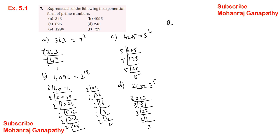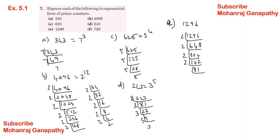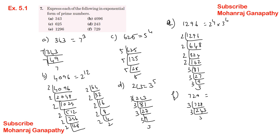D: 1296. Dividing: 1296 ÷ 2 = 648, 648 ÷ 2 = 324, 324 ÷ 2 = 162, 162 ÷ 2 = 81, 81 ÷ 3 = 27, 27 ÷ 3 = 9, 9 ÷ 3 = 3, 3 ÷ 3 = 1. So 1296 equals 2 power 4 into 3 power 4. E: 729 equals 3 power 6.